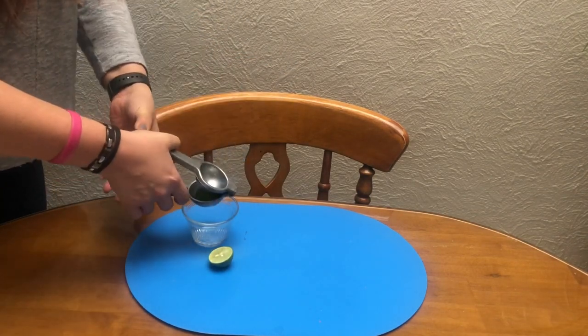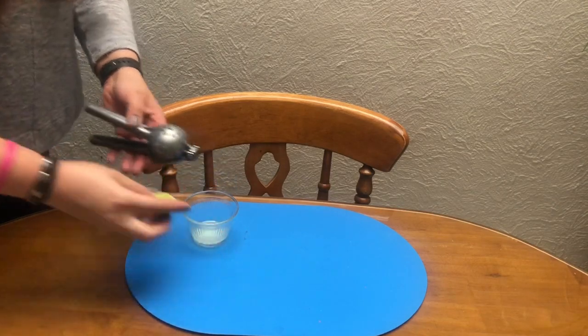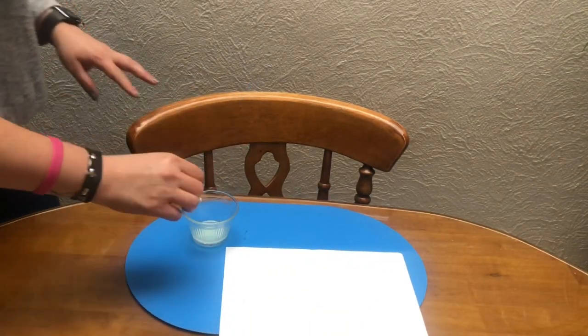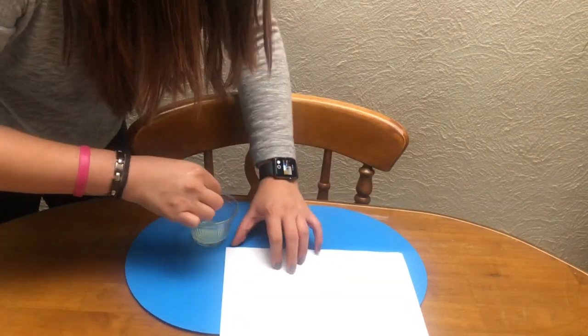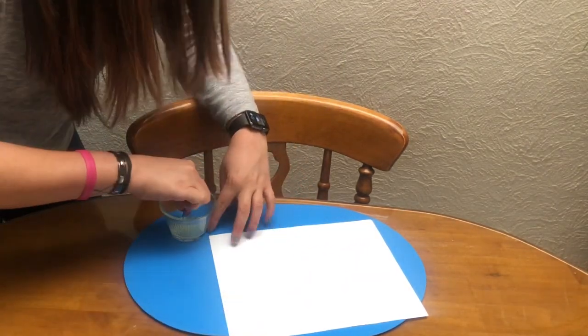Cut out the lemon and squeeze it in the bowl. Then take a q-tip. You will use it as a pencil. Dip the q-tip in the lemon juice and write your message.